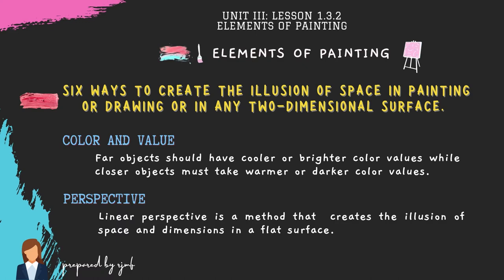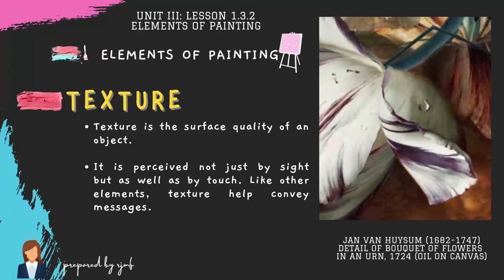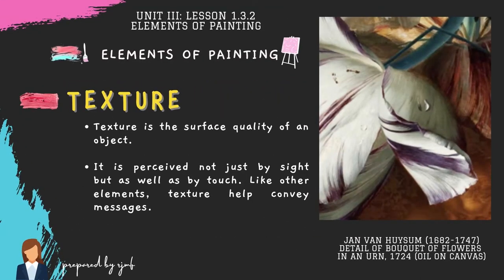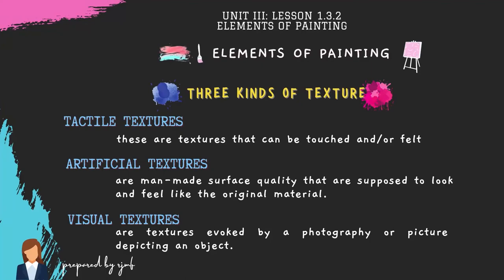The last element of painting is texture. Texture is the surface quality of an object, perceived not just by sight but also by touch. Like other elements, texture helps convey messages. There are three kinds: tactile textures, which can be touched and felt; artificial textures, which are man-made surface qualities meant to look and feel like the original material; and visual textures, which are textures evoked by a photograph or picture depicting an object.